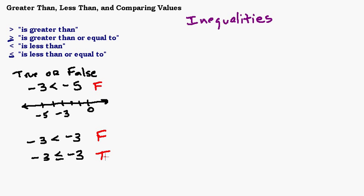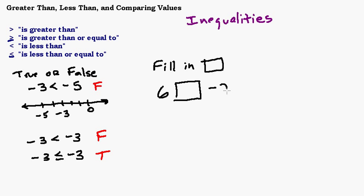Let's look at a couple of ways to remember which symbol is less than and which is greater than. When I first learned it, I was told to point to the smaller one. Another type of problem you might have is fill in the box to make the statement true — for example, 6 [box] negative 2. Find the smaller one and point at it, and that will always work. So: 6 is greater than negative 2.